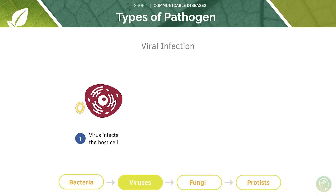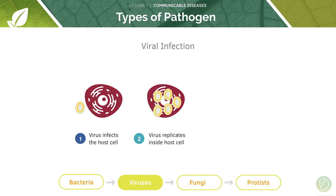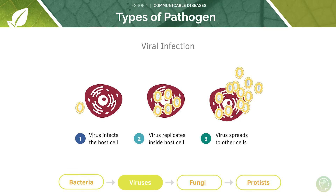Let's look at this in more detail. The virus infects the host cell by breaching the cell membrane and getting inside. From there the virus replicates inside the host cell, utilizing its nutrients and sheltered environment to reproduce itself, and then spreads to other cells. It does this by bursting out of the host cell, which causes cell destruction — and that's going to be one of the symptoms that will present if you have a viral infection.